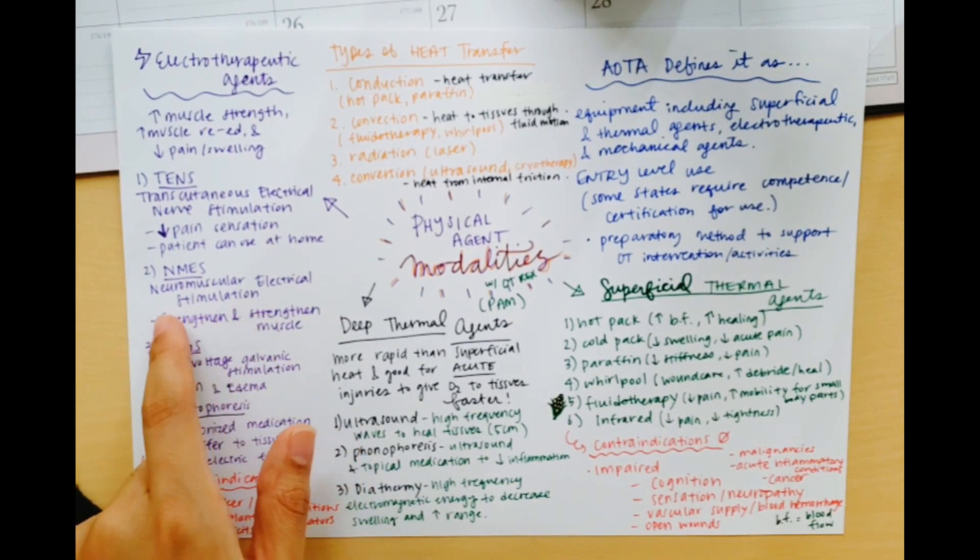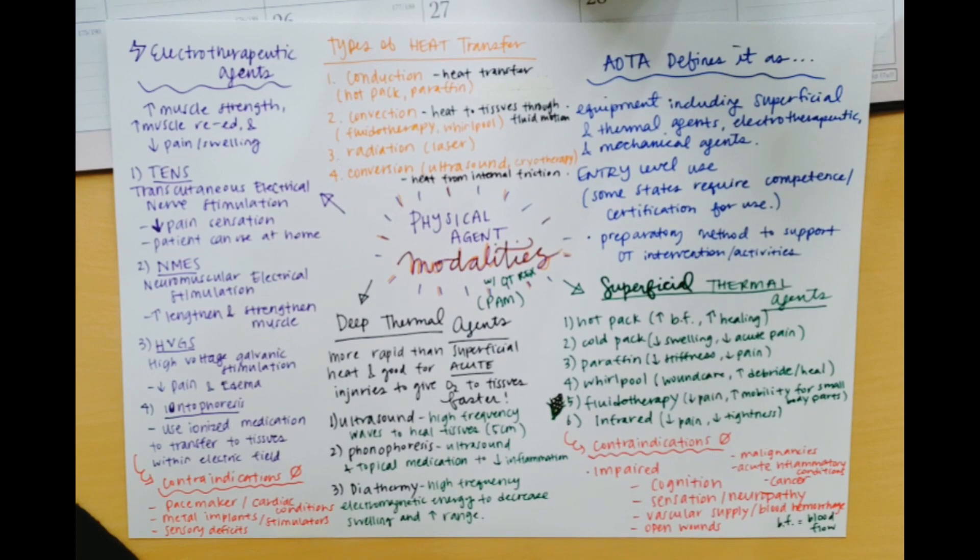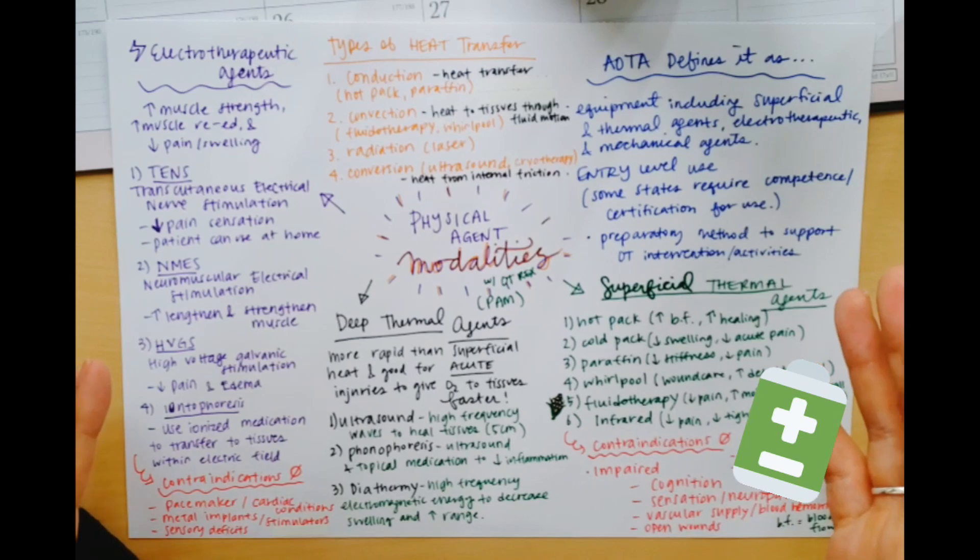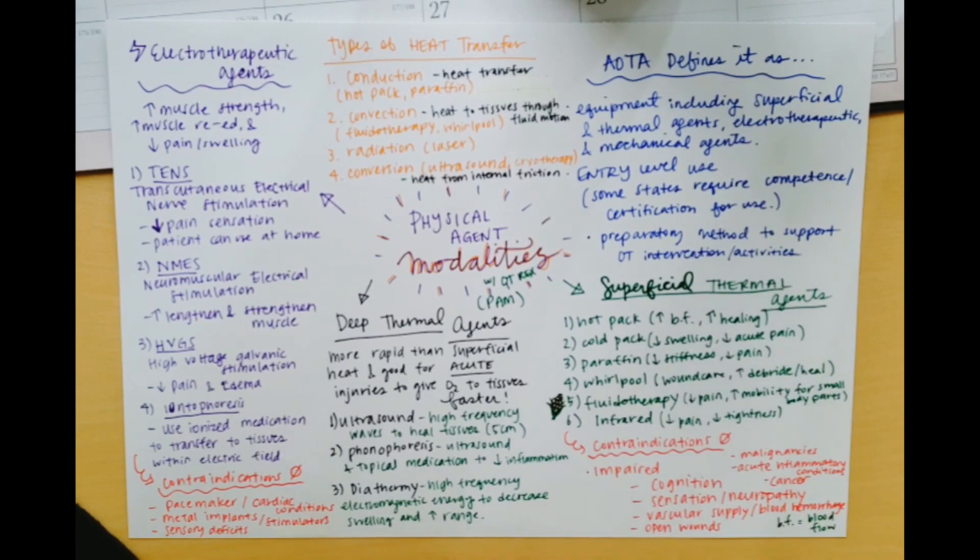The NMES is the Neuromuscular Electrical Stimulation and it helps increase and lengthen... Iontophoresis uses ionized medication and that's going to transfer to our tissues within an electric field and it looks basically like a band-aid but we use... I mostly use the dexamethasone and that is a little steroid that you can apply to the band-aid and it's set up to have like a plus and minus charge to be ionized like a battery and it sticks right on like a patch and does its thing. So that's low maintenance and quick so that's nice.